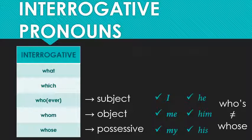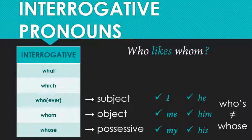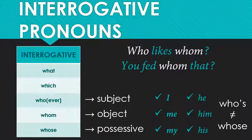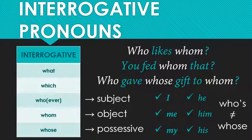Let's look at some more examples. 'Who likes whom?' — who is the subject, whom is the direct object. You'll often hear 'who likes who,' but by official rules it's 'who likes whom.' 'You fed whom that?' — here whom is the indirect object; you fed what? That. To whom? Indirect object. 'Who gave whose gift to whom?' — who is the subject, whose is possessive, and the final whom is the object of the preposition.